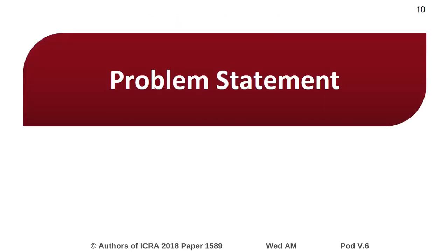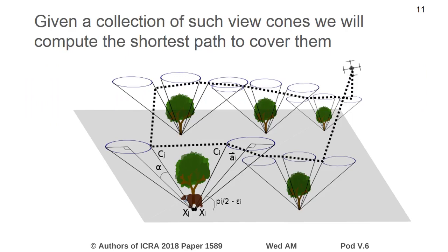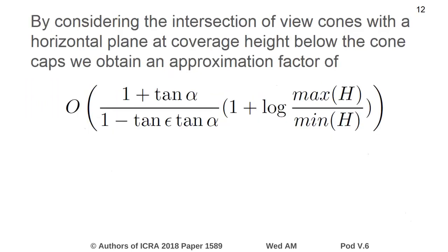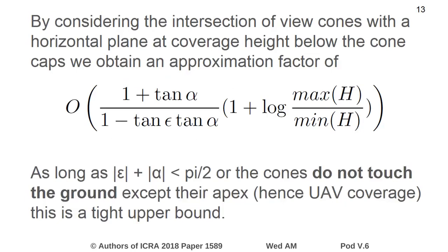Our problem statement is the following: given a collection of such inverted viewcones, we will compute the shortest path that covers all of them. By considering the intersection of viewcones with a horizontal plane at the coverage height below the cone caps, we obtain the following approximation factor. As long as the cones do not touch the ground except for their apex points, this is a tight upper bound, and since the cones are not allowed to intersect with the ground, they can only be covered by a flying robot.